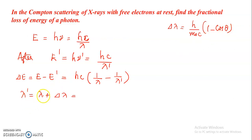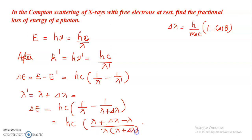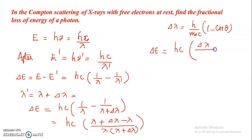So lambda dash equals lambda plus delta lambda. Therefore, the change in energy delta E equals HC into (1 by lambda minus 1 by lambda plus delta lambda), which equals HC into (lambda plus delta lambda minus lambda) divided by lambda into (lambda plus delta lambda). So delta E equals HC into delta lambda divided by lambda into (lambda plus delta lambda).